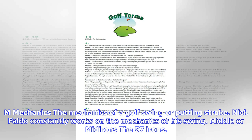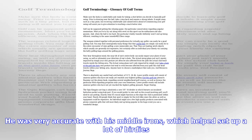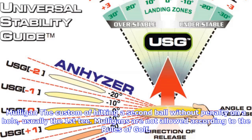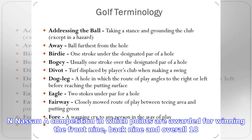Inside to out: a swing path in which the club head approaches the ball from inside the target line and, after contact, continues to the outside of the target line before turning back to the inside. Every so often, his inside-to-out swing path resulted in shots that missed the target to the right.